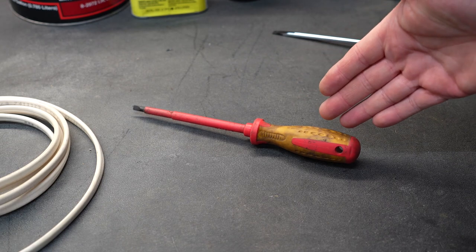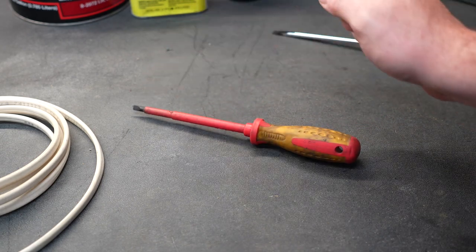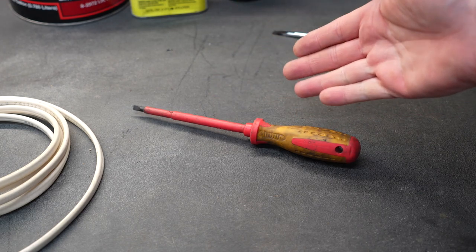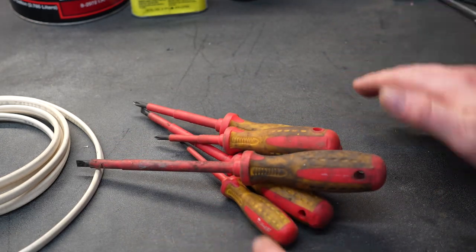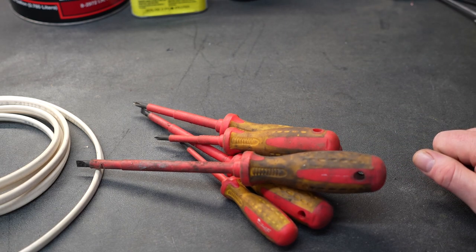An insulated screwdriver looks like this. The handle and the shaft is insulated from the metal. This way, if you were to be working in a situation and accidentally bump the shaft against some live electricity, you will not get shocked. Depending on the job, the area of the country you live in, the local codes, what you're working on, these may or may not be required.